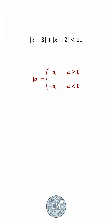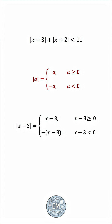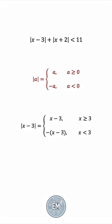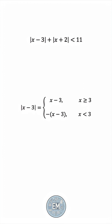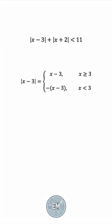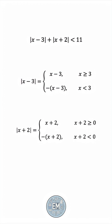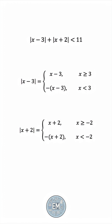The absolute value of x minus 3 is the positive version if x is greater than 3, and the negative version if x is less than 3. Let's now do the same thing for the other absolute value. It'll be x plus 2 if x is greater than or equal to negative 2, but the negative version if x is less than negative 2.